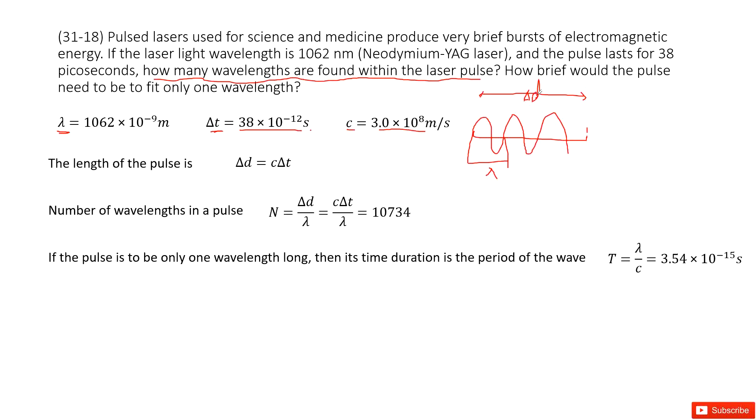Now for delta d, how do we get the length of a pulse? Use speed times time, right? Speed of light times delta T. Now we input delta T. We have C, delta T, and lambda given. So we can input all the given quantities.